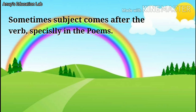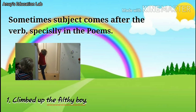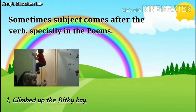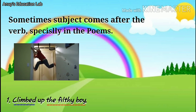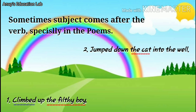Let us see few examples. Climbed up the filthy boy. Here, the filthy boy is the subject of the sentence because he is doing an action. In this sentence, subject comes after the verb, climbed. Jumped down the cat into the well. Here, the cat is the subject of the sentence as it is doing the action. In this sentence too, the subject comes after the verb, jumped.